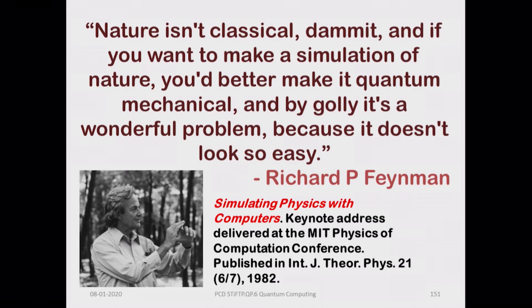That is the reason Feynman says that nature is not classical. It is not that there is a part of nature which is quantum and another which is classical — the whole of nature is described best only by quantum laws. And if you are now trying to simulate nature, making some sort of a cloning machine, you are going to look for a cloning machine whose operation is correctly described by quantum laws.